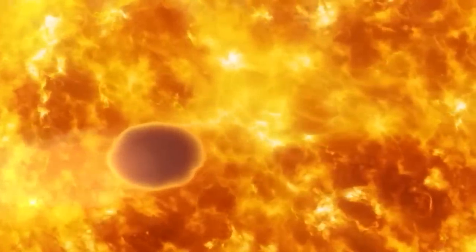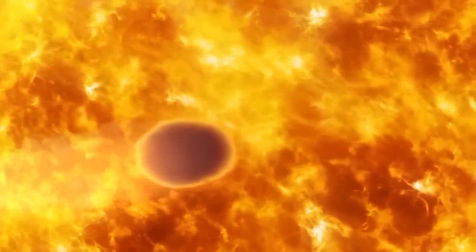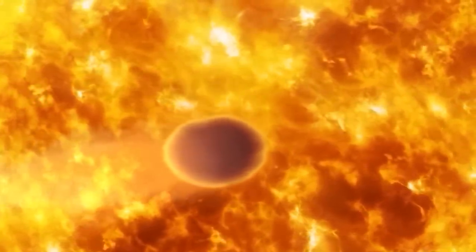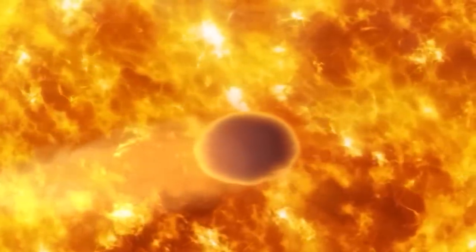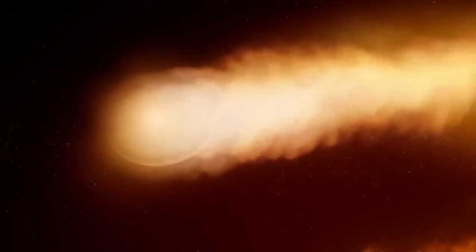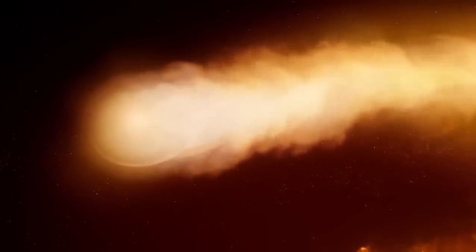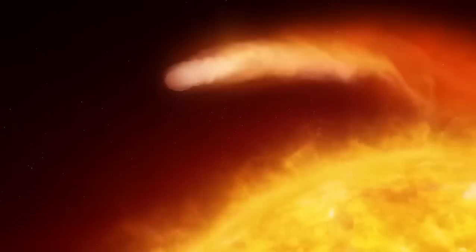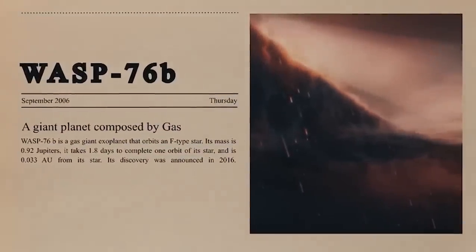The dayside temperature on WASP-76b reaches a sweltering 4,000 degrees Fahrenheit. That's 2,200 degrees Celsius. Only 2,700 degrees Fahrenheit, or 1,500 degrees Celsius, on the planet's nightside. Yet that's still low enough for iron to condense and precipitate out as a rain of molten metal. These substances and minerals have previously been found in exoplanetary atmospheres in a diffused form.